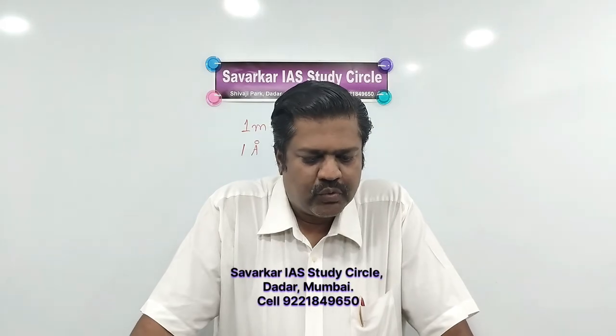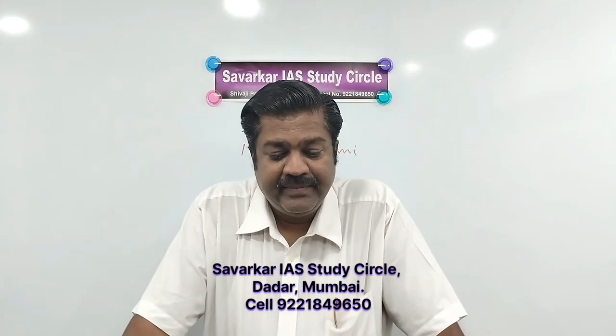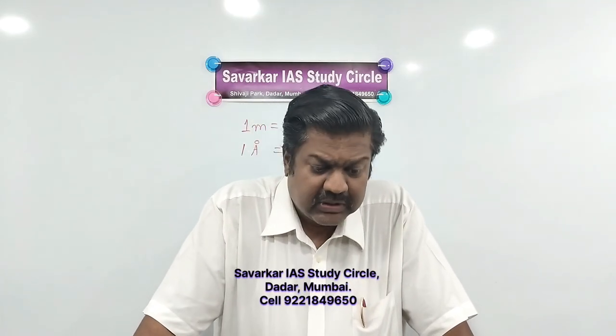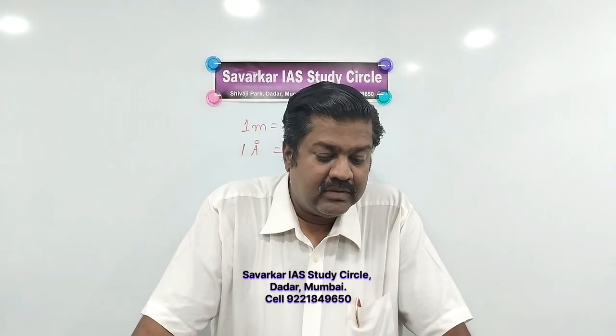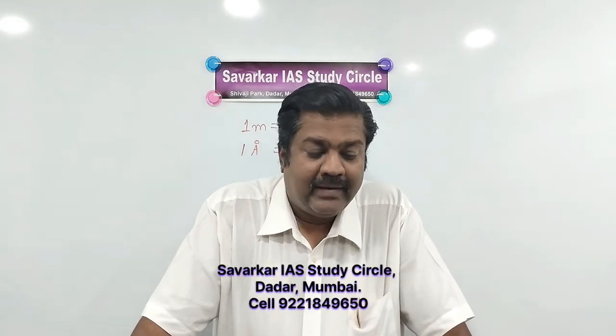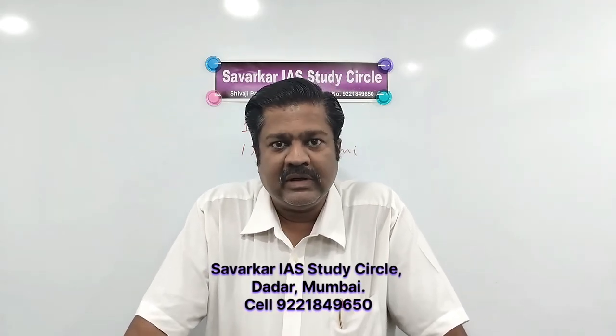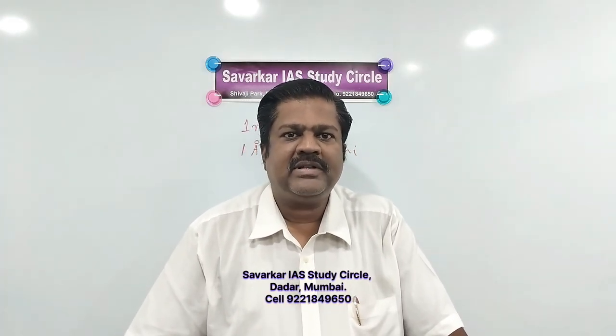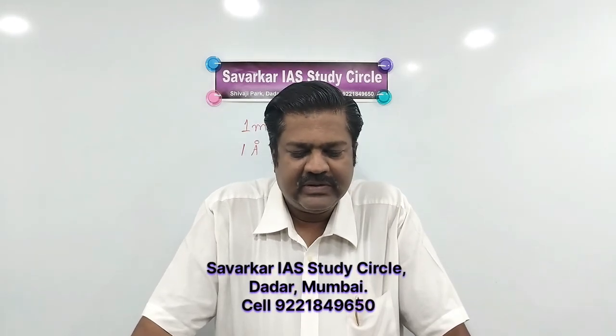Second statement: nucleus is approximately 100 times smaller than the atom — this is false; it is actually 1 lakh (100,000) times smaller. Third statement: atom of one element can be converted into atom of another element — this part is true, but the statement adds 'according to Dalton's principle,' which makes it false. Dalton said this is not possible, because radioactivity had not been discovered in his time, so transmutation was unknown to him.